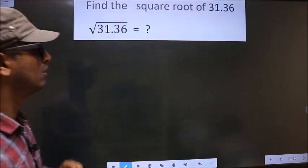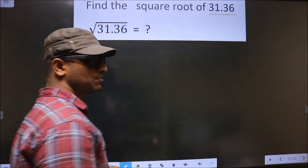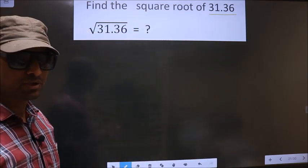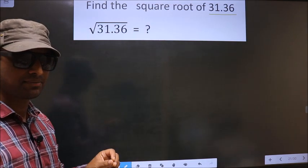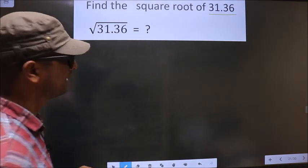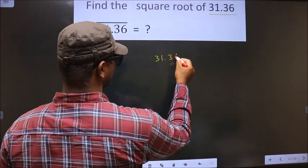Find the square root of 31.36. To find the square root by long division method, first we should frame it in this way. See, that is 31.36.